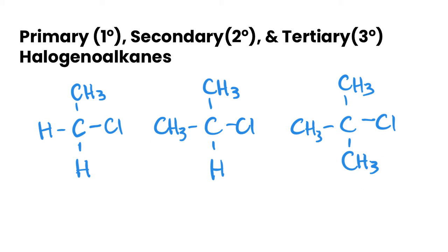If we take a look at halogenoalkanes, we can define them in the same way where we take a look at the carbon. Here's our halogen. Let's highlight our halogen in all of them, and our carbon in all of them. You can see in the first one we only have one alkyl group, the second one we have two, and the third one we have three.